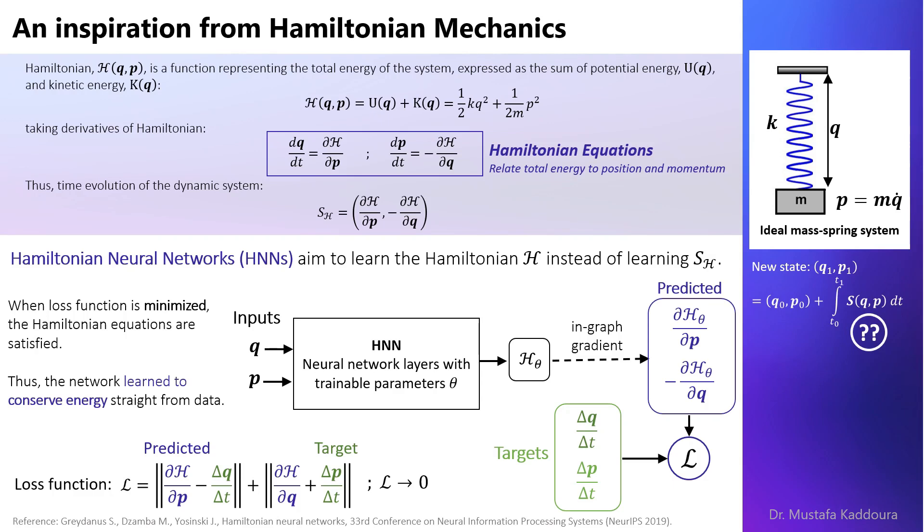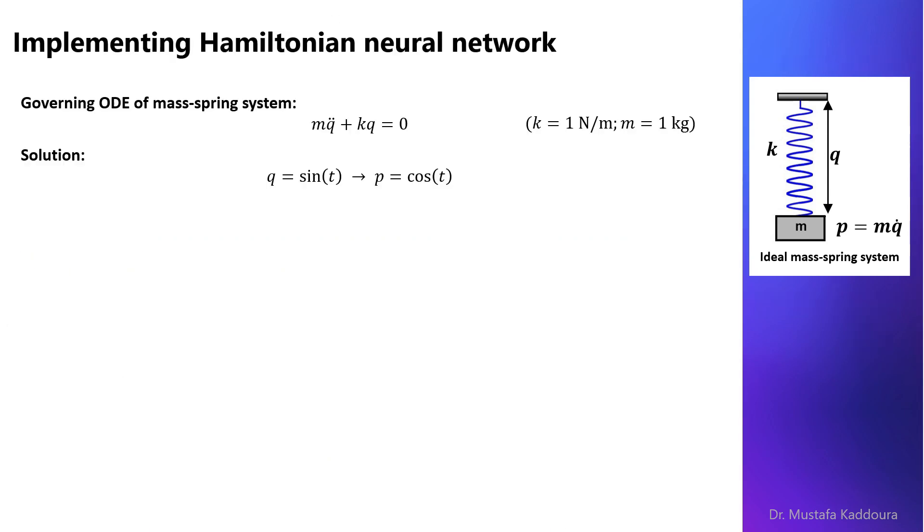Let's now see how we can implement Hamiltonian neural network. The governing ordinary differential equation of the mass spring system is given as follows, and the solutions have the following shape.